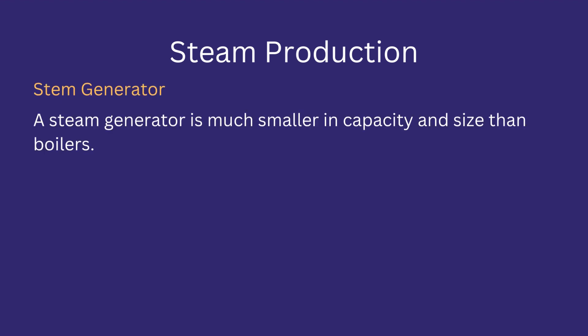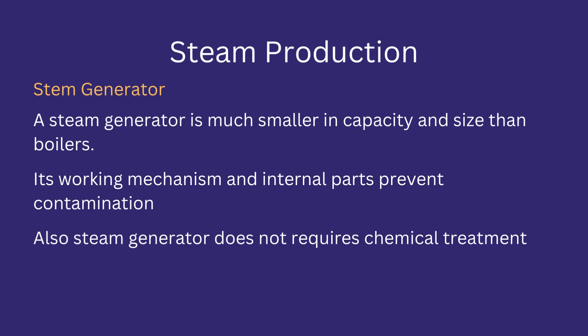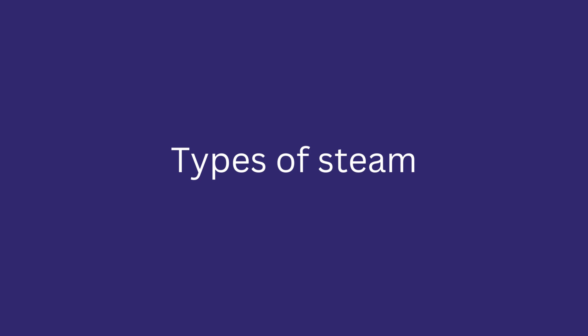A steam generator is also equipment used to convert water into steam. It is much smaller in capacity and size than boilers. Its main advantage is that its internal parts prevent contamination because they are made of pharma-grade metallic parts. The feed water to the steam generator is WFI or USP-grade water and does not require any chemical treatment. Steam from a steam generator can be used for processes in which steam comes in direct contact with the product.